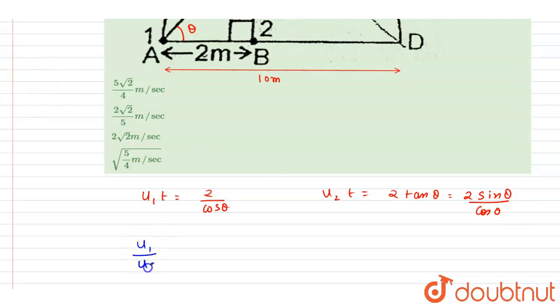Divide the two expressions. This is 2 sin theta by cos theta. So I will write down u1 by u2. If you see, this 2 by cos theta is common in the two, so that will get cancelled out, and I will write down 1 by sin theta.